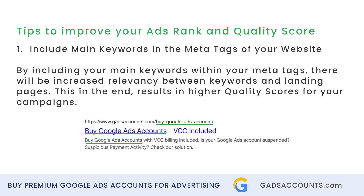Here are tips to improve your ad rank and quality score. Include main keywords in the meta tags of your website. By doing this, there will be increased relevancy between keywords and landing pages, which will result in a higher quality score for your campaigns. Check out the image in this video for an example.